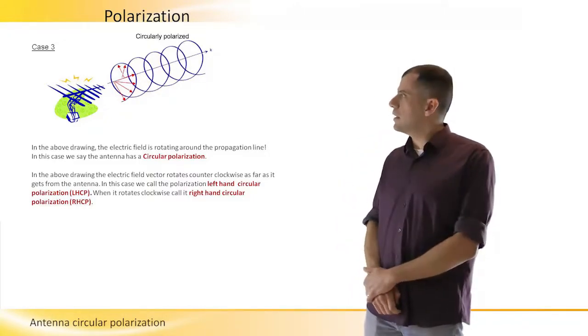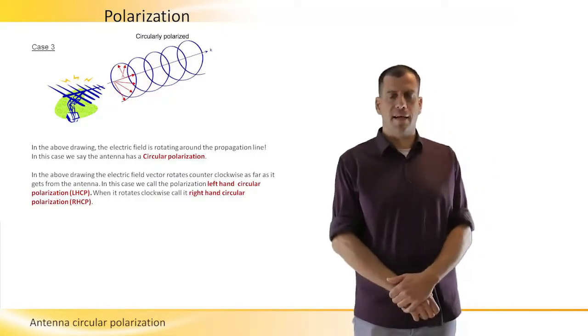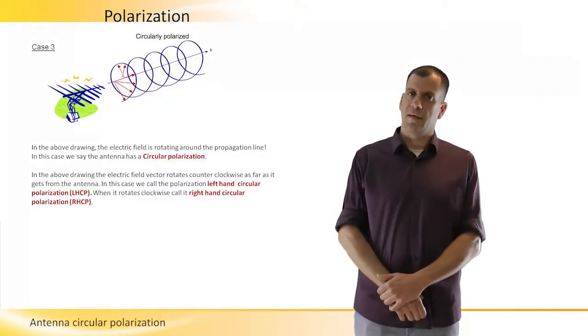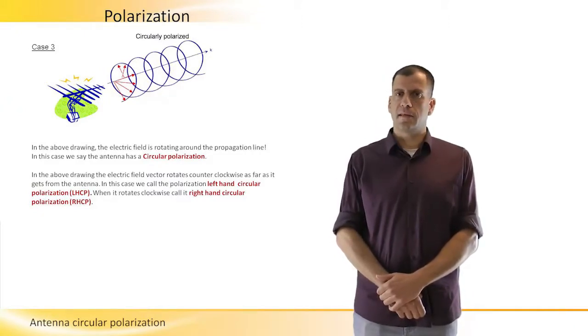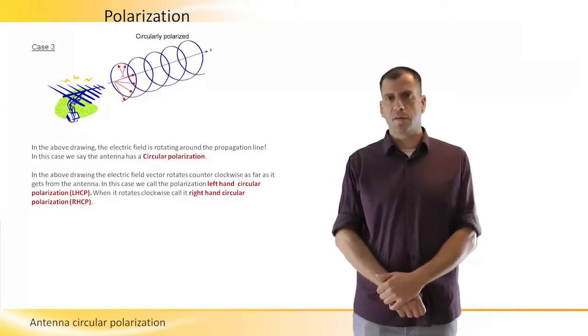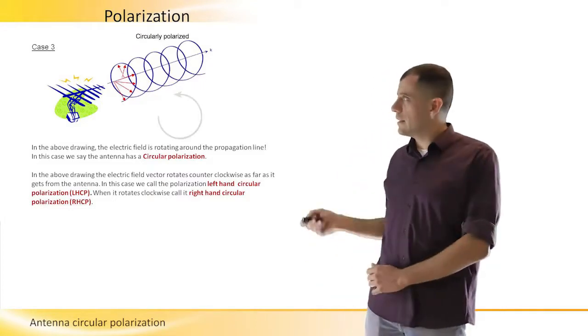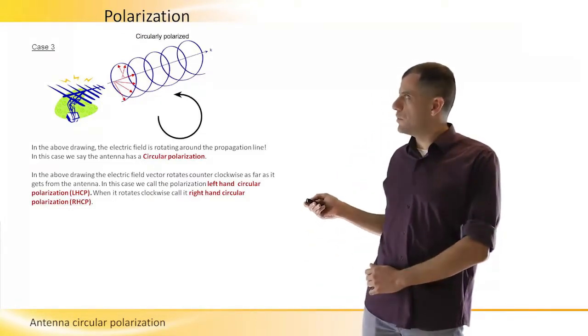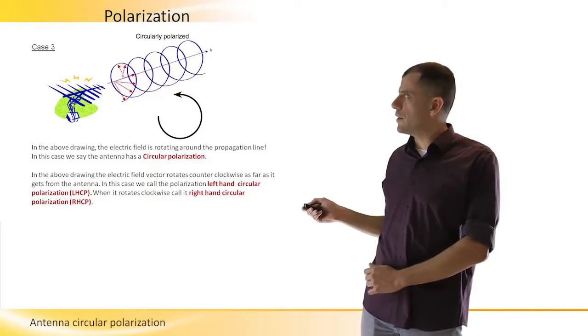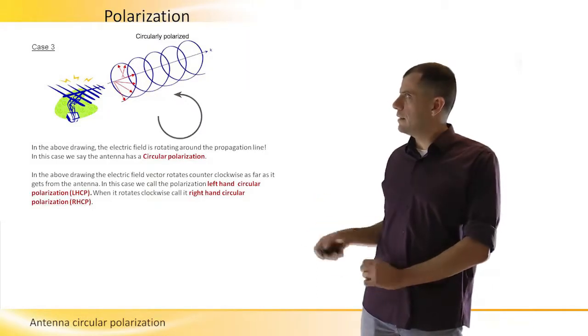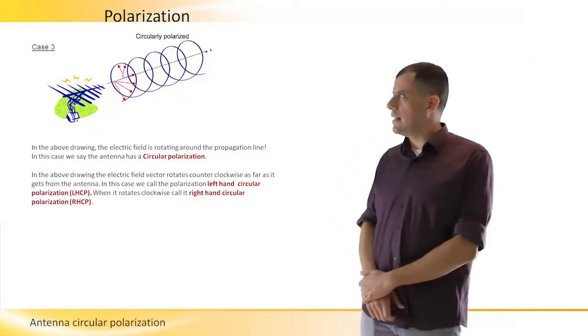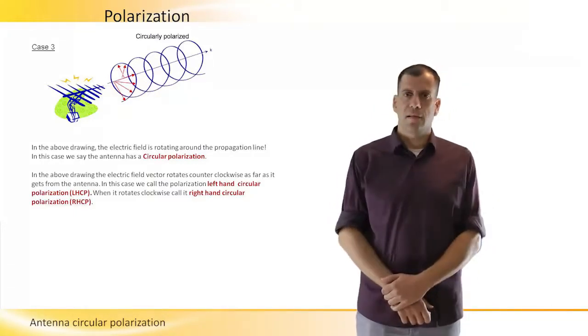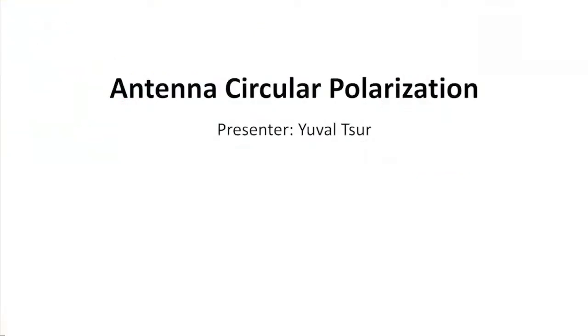The minus or the plus 90 degrees between the vertical and the horizontal components are those that yield the right-hand or the left-hand circular polarization. And in this slide, again, this is the left-hand circular polarization. As we propagate away from the antenna, the electric field vector rotates counterclockwise.